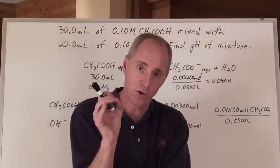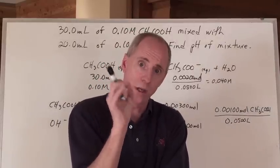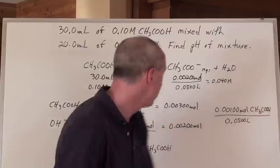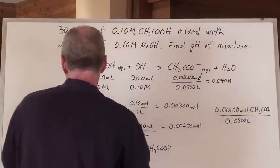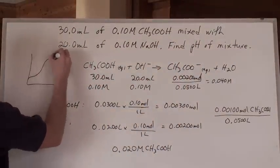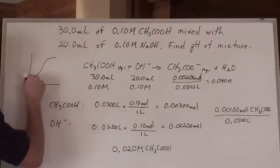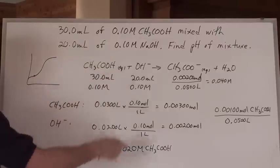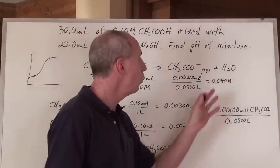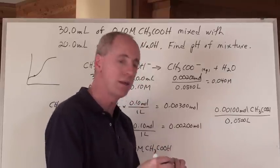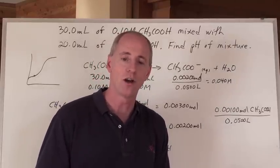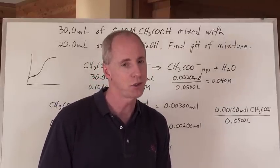That's a buffer — the weak acid and its conjugate base mixed together. This is what, in a titration curve, we're right in the buffer region, so we're calculating the pH of a buffer. So if we're doing that, we need a way to calculate this, and there's a couple of ways: there's a long way, and then there's a shortcut.